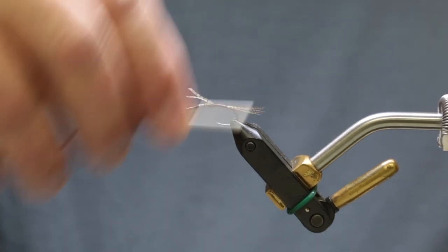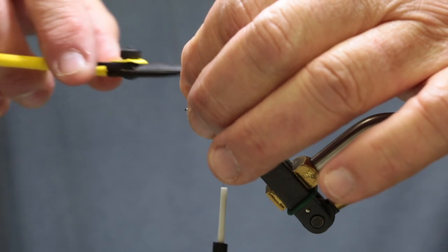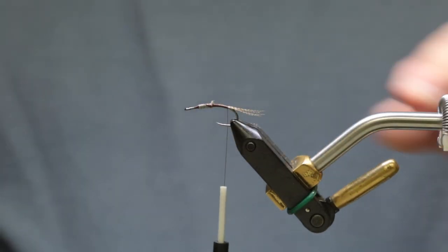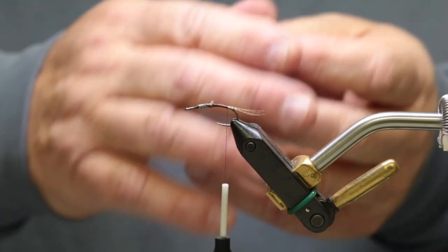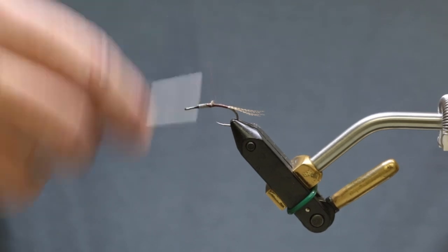You want a good tapered body. I'm always of the opinion that a good tapered base is going to make it easier for you to dub. You won't have high spots; it's going to be nice and even. Just build it up a little bit with some thread.